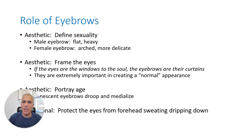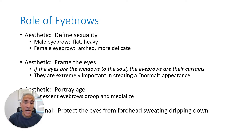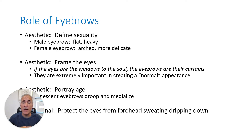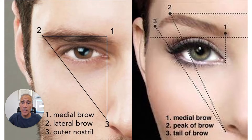There are several roles of the eyebrows, both functional and aesthetic. They define sexuality — male eyebrows are typically flat and heavy, while female eyebrows usually arch and are more delicate. They frame the eyes and are extremely important in creating a normal appearance. They portray age because with senescence, eyebrows droop. Functionally, they protect the eyes from forehead sweat dripping down.